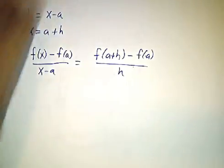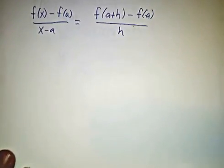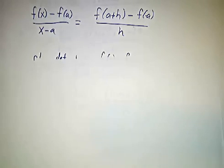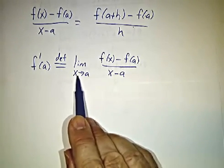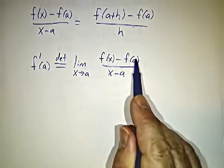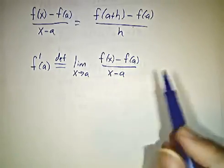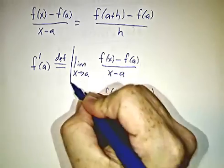So the idea is that f prime of a is the limit as x approaches A of f of x minus f of A over x minus A. That's important. We'll put a box around it.